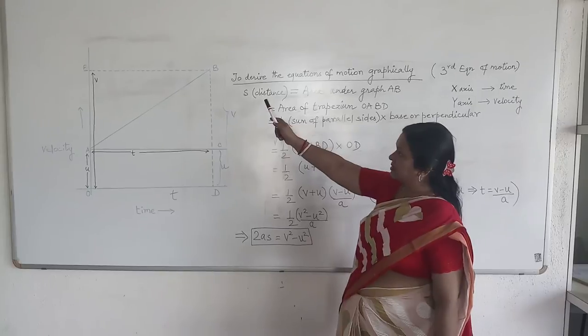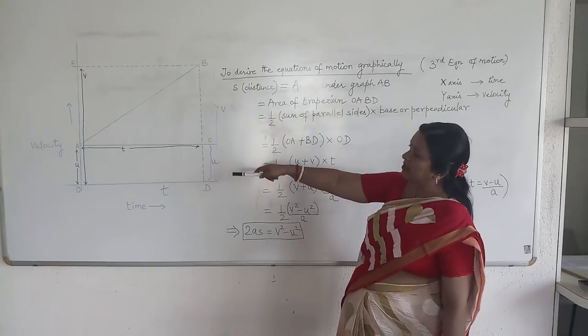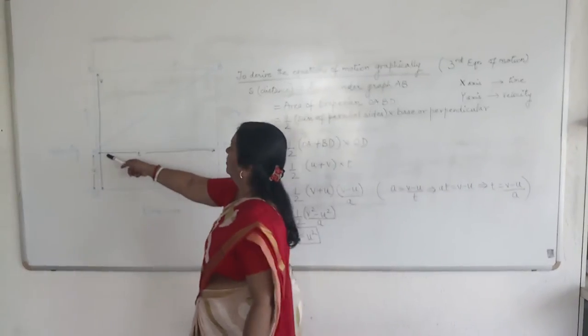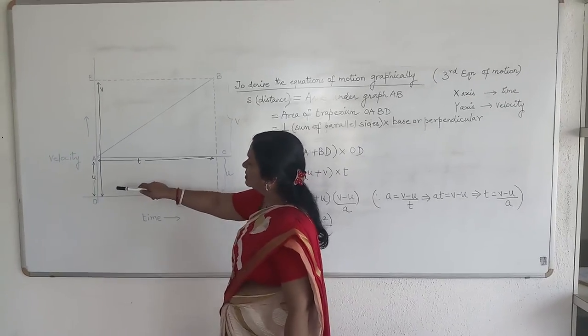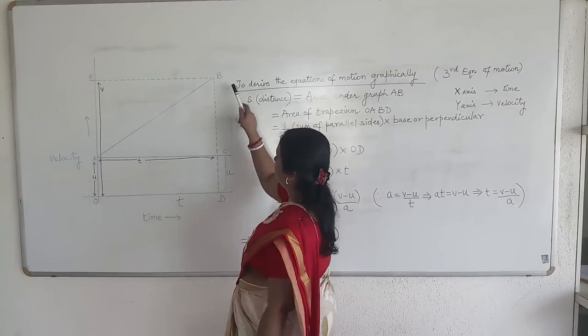Again, we are going to find out the distance. We know that distance is the area under the graph AB. AB is the graph. The area under the graph AB is this trapezium OABB.